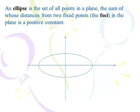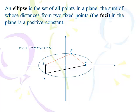So instead of one focus as we had in parabolas, we will have two foci. I've marked the two foci. You pick any point — I've marked two points here, P and H. If you take the distance from each focus to the point and add them up, that sum will never change no matter where you go. D1 might change, D2 might change, but their sum will never change. That's the definition of an ellipse.